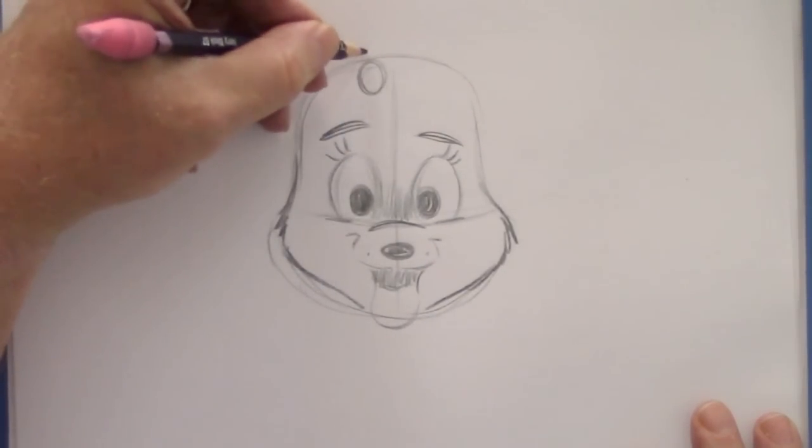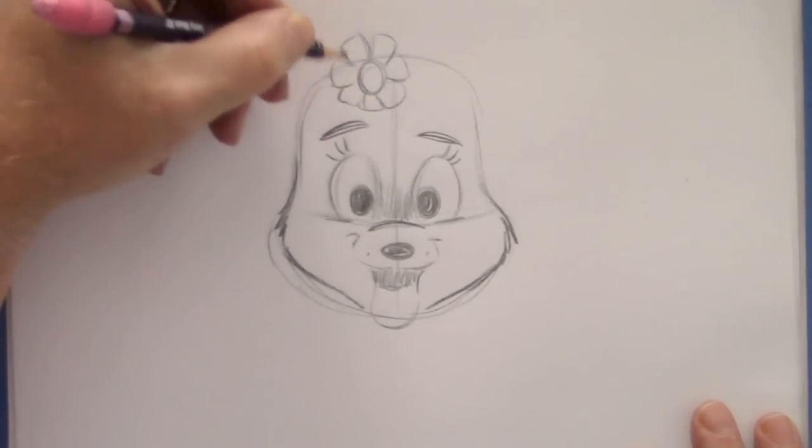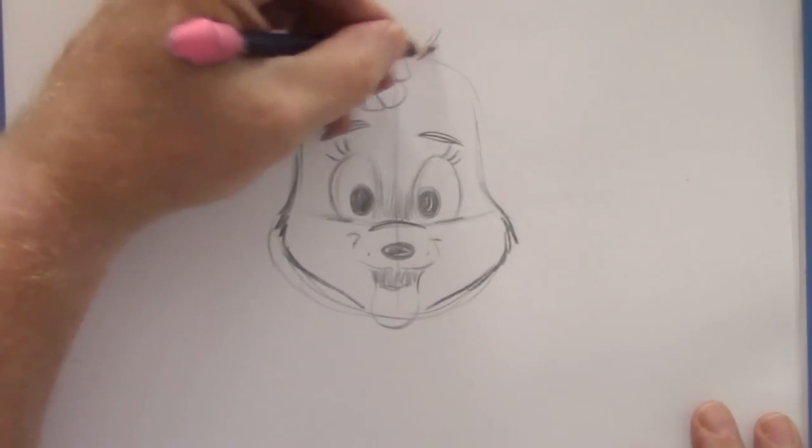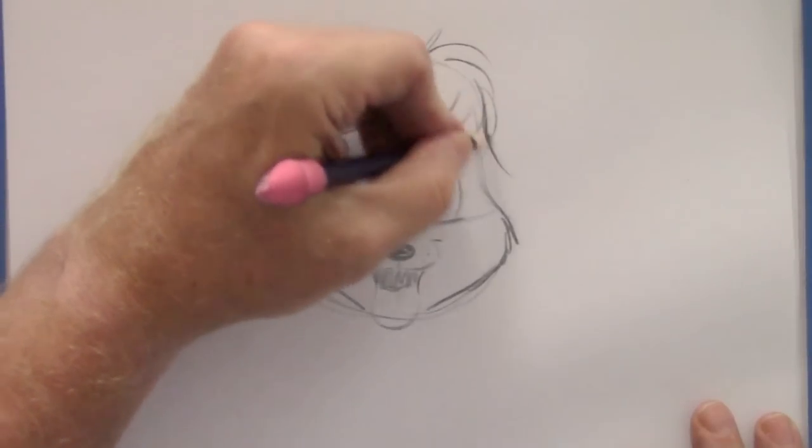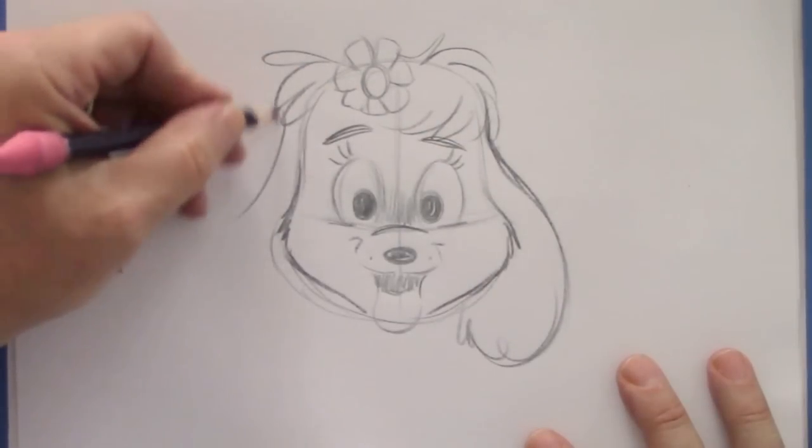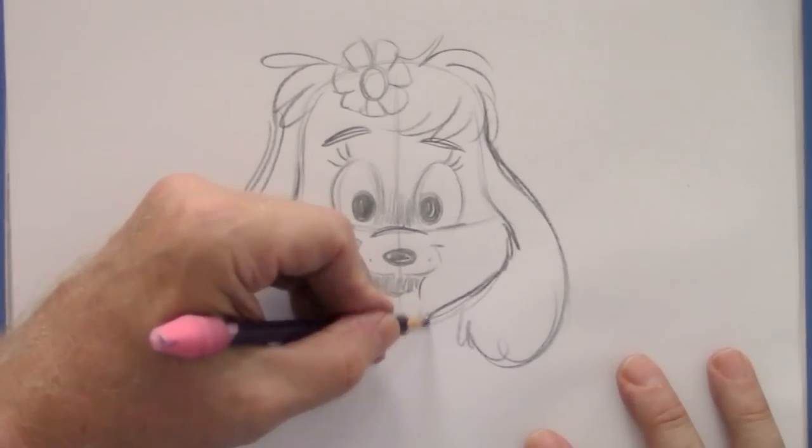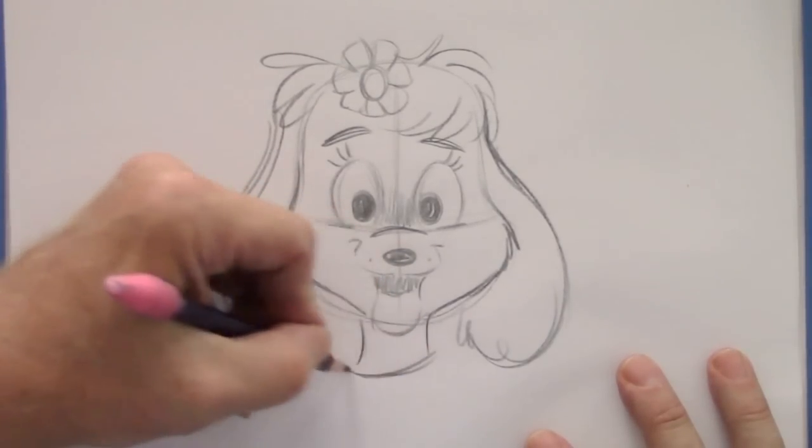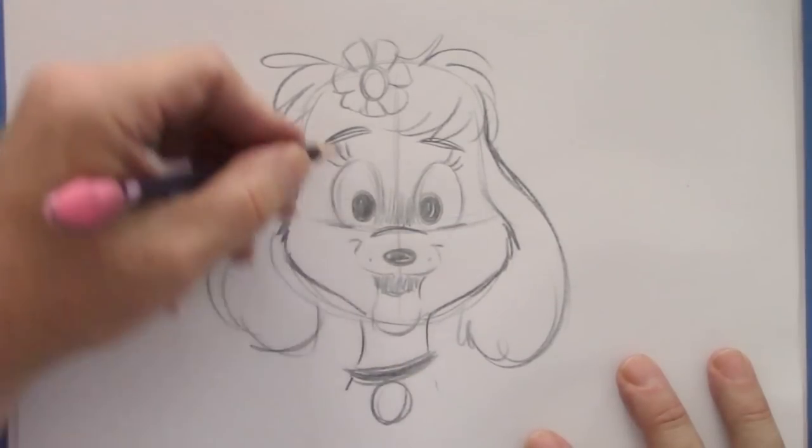I'm going to put a flower for her right here. And a little bit of curly cues. Kind of that big floppy, curly, poodle-esque kind of ears like that. Long neck. And of course, that's a pedigree so she gets a collar like so.